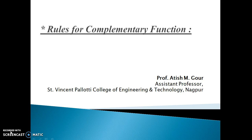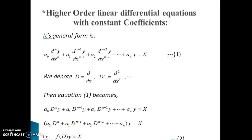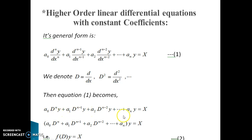Let us see what is a higher order linear differential equation with constant coefficients. This is the general form of such an equation. The notation D stands for d/dx, that is derivative with respect to x, and D² stands for d²/dx², the double derivative with respect to x. Using this notation, equation 1 implies a compact form. Since y is common in all terms, we take y common and are left with an operator acting on y equal to X. We write this bracketed quantity as f(D), which is a polynomial in D of degree n. This is equation number 2.